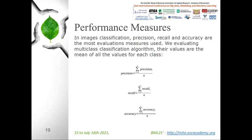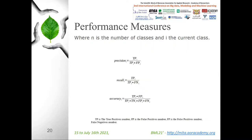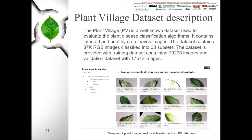Now we will see performance measures. In image classification, precision, recall, and accuracy are the most used evaluation measures. We evaluate multi-class classification algorithms using these metrics. The PlantVillage dataset is a well-known dataset used to evaluate plant disease classification algorithms. It contains infected and healthy crop leaf images — 87k RGB images classified into 38 subsets. The dataset is provided with a training set containing 70,295 images and a validation set with 17,572 images.